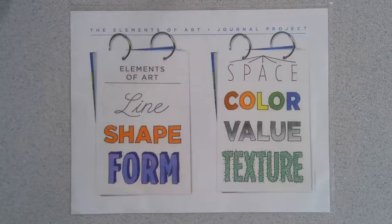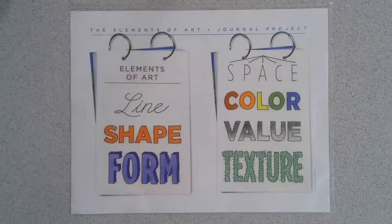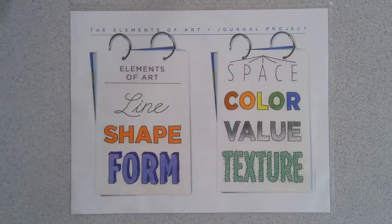These are the elements of art. We start with line. Lines show the outsides of objects. Without lines, we wouldn't have art. We have shape. There are organic shapes and geometric shapes.